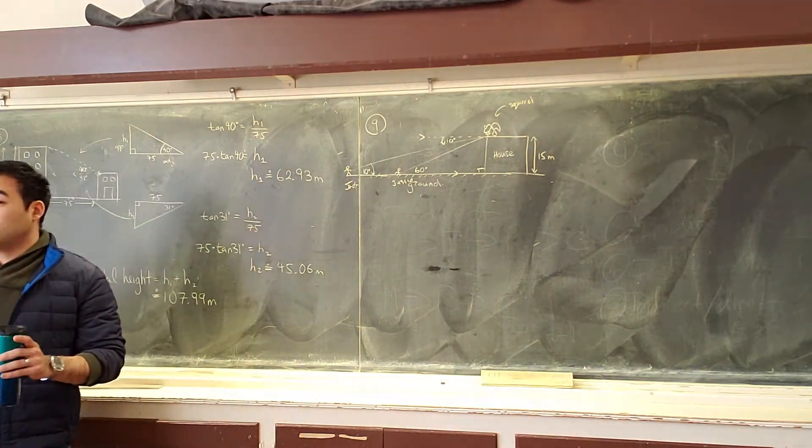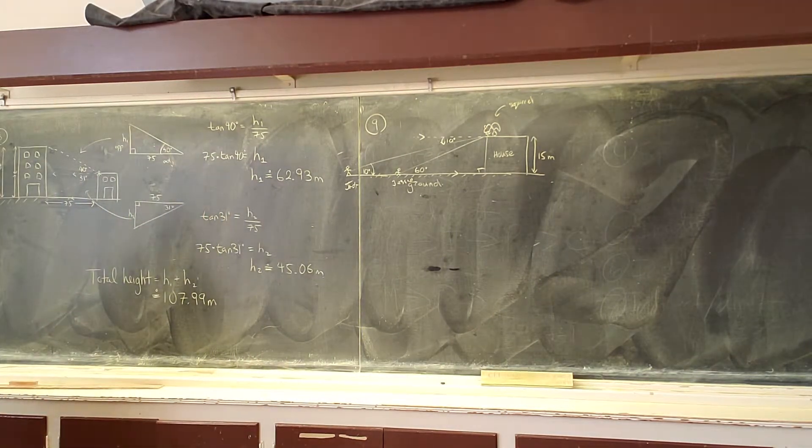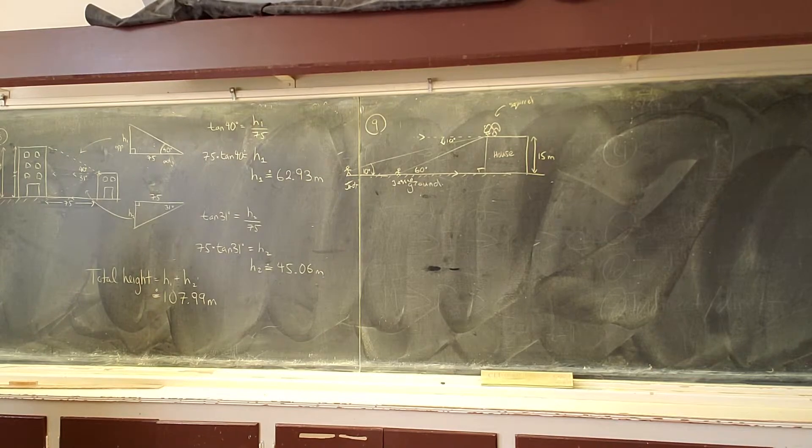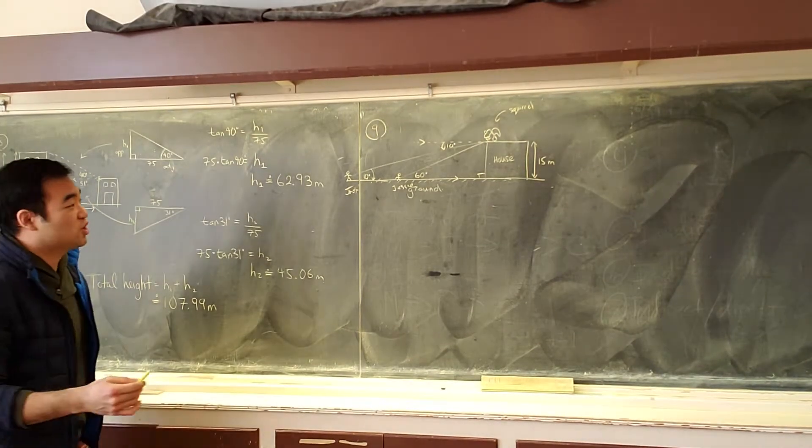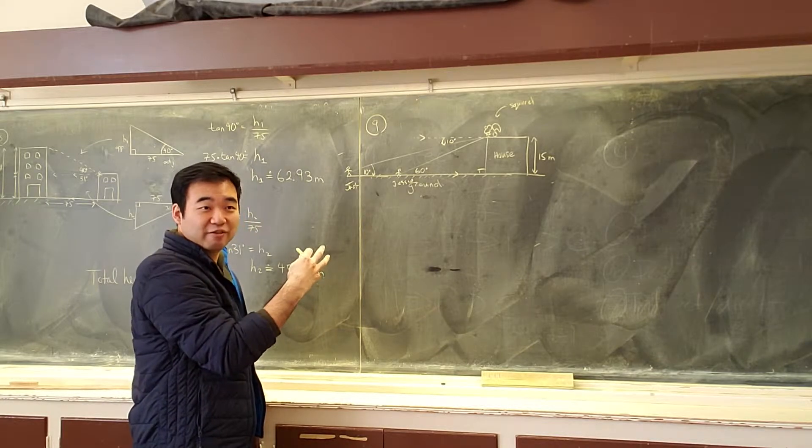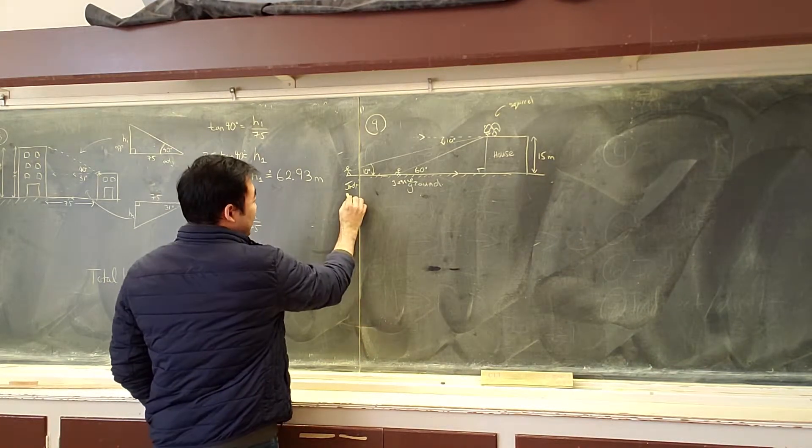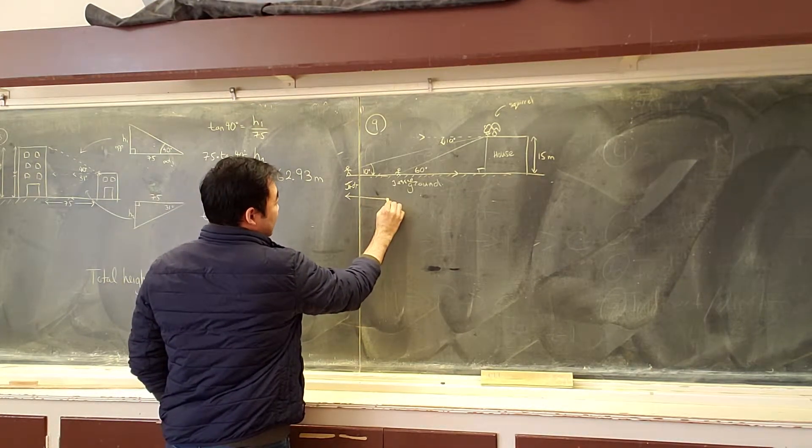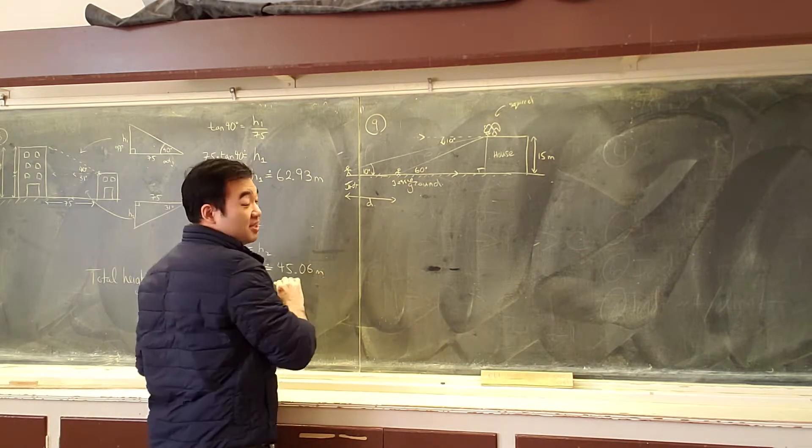So even though I describe it differently, if you can paint the picture, the rest is the same. What is the question I'm looking for? What is the value I'm looking for? The distance between two things. Yeah. So let's call that distance e.